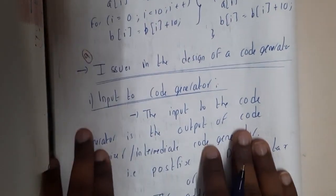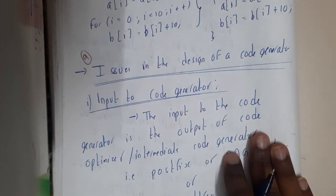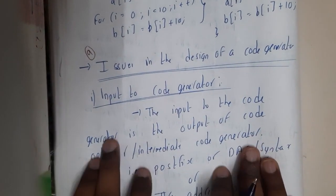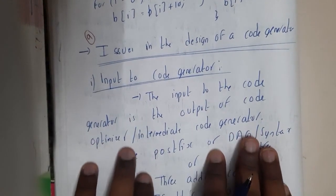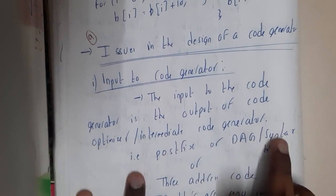Hello guys, we are back with our next lecture. In this lecture, let us go through the issues in designing of a code generator. So the input to the code generator is the output of code optimizer or intermediate code generator, that is a postfix or a DAG or syntax tree or three address code.